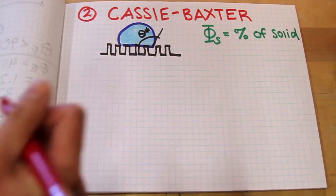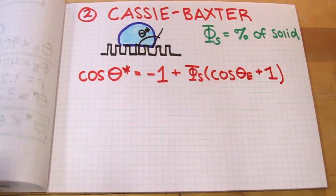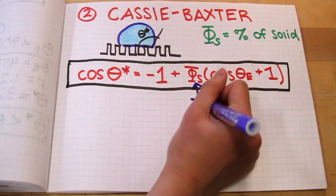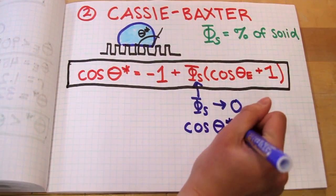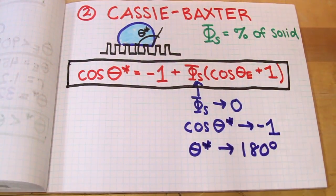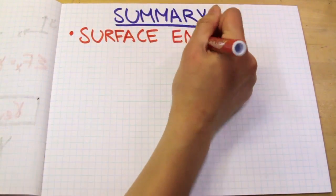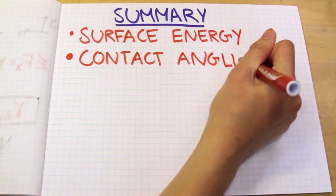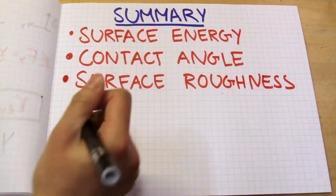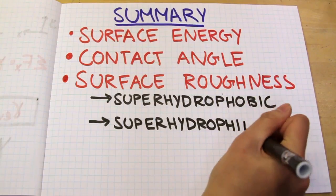A special form of the Cassie-Baxter model shows that theta* is dependent on the percent of solid in contact with the droplet. As this value approaches zero — meaning the droplet is sitting mostly on air pockets — the cosine of theta* approaches negative 1, and theta* approaches 180 degrees. To summarize, how a water droplet behaves when it contacts a solid depends on surface energies. The contact angle describes whether the surface is hydrophobic or hydrophilic, and surface roughness can cause surfaces to become superhydrophobic or superhydrophilic, as shown by the Wenzel or Cassie-Baxter models.